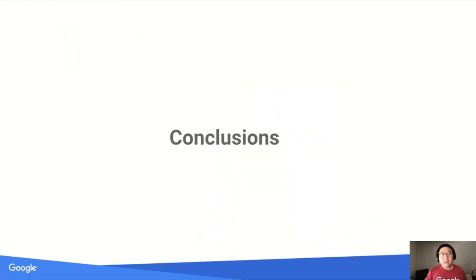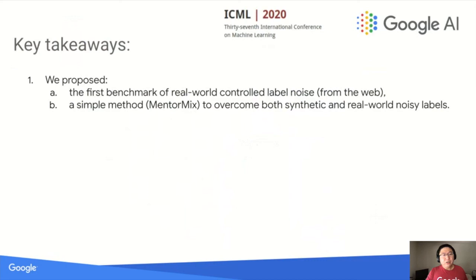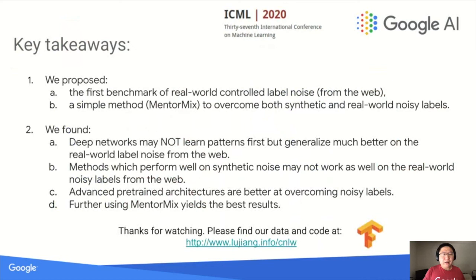In conclusion, we proposed the first benchmark of real-world controlled label noise from the web and a simple yet effective method called MinterMix to overcome both synthetic and real-world noise labels. By conducting the largest experiments by far, we arrived at interesting observations: deep networks may not learn patterns first but generalize much better on real-world label noise from the web; methods that perform well on synthetic noise may not work as well on real-world noise; advanced architectures are better at overcoming noise labels for both synthetic and real-world noise; and using MinterMix yields the best results. Thanks for watching — we will release our code and dataset at the provided link.